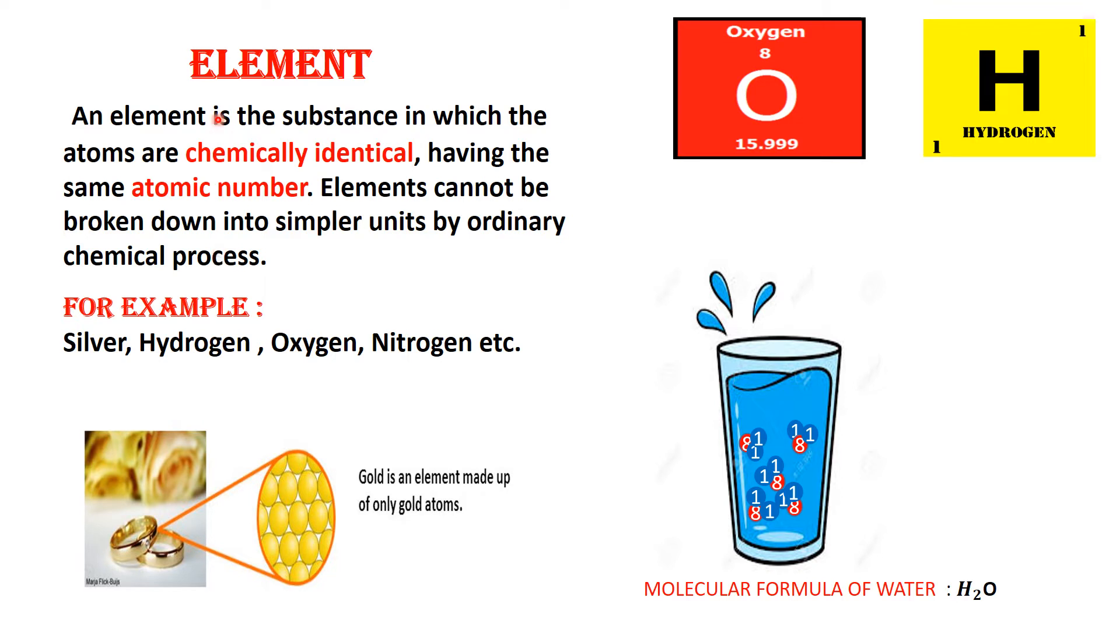To understand the definition of element more clearly, let's look at this picture over here. Now, this picture includes a gold ring. Student, gold is an element. Now, if we take a particle of this gold ring, you can see that it is made up of atoms.